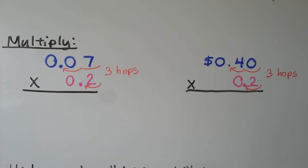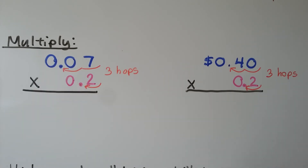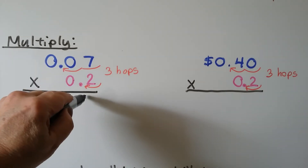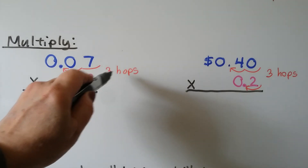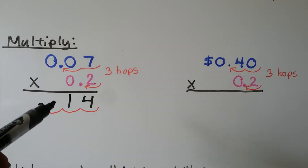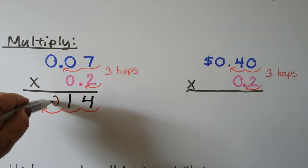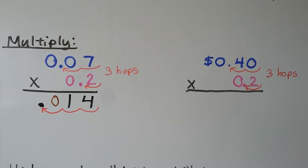We need to multiply 7 hundredths times 2 tenths. We think 2 times 7 is 14. There are 3 hops in the factors, so there's going to be 3 hops in the product. We know our decimal point should be here. We're going to have to insert a 0 in the tenths place as a placeholder. Our answer is 14 thousandths.